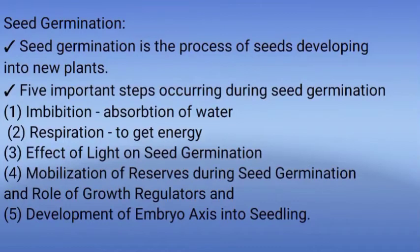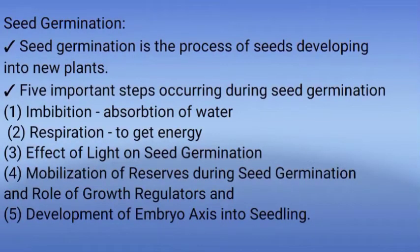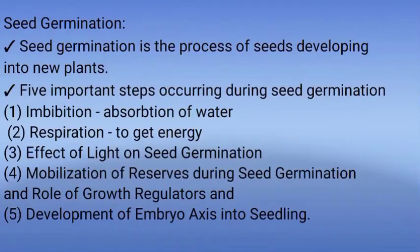The fifth step is the role of growth regulators — whatever energy and nutrients are present in the seeds, they can be mobilized. The fifth step also includes the development of the embryonal axis into a seedling. The radicle forms the root system and the plumule forms the shoot system — these are the two parts of the embryonal axis.